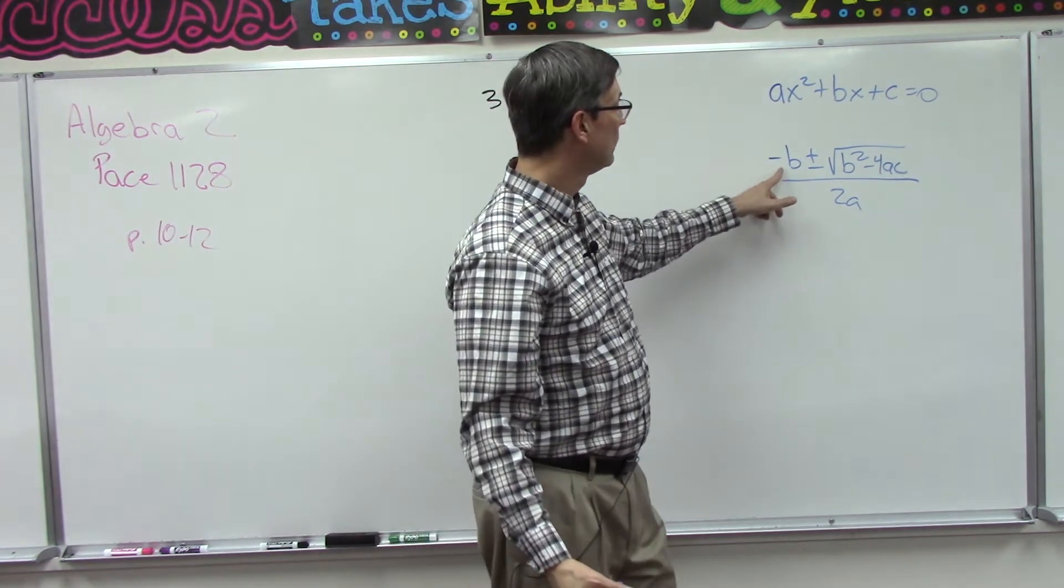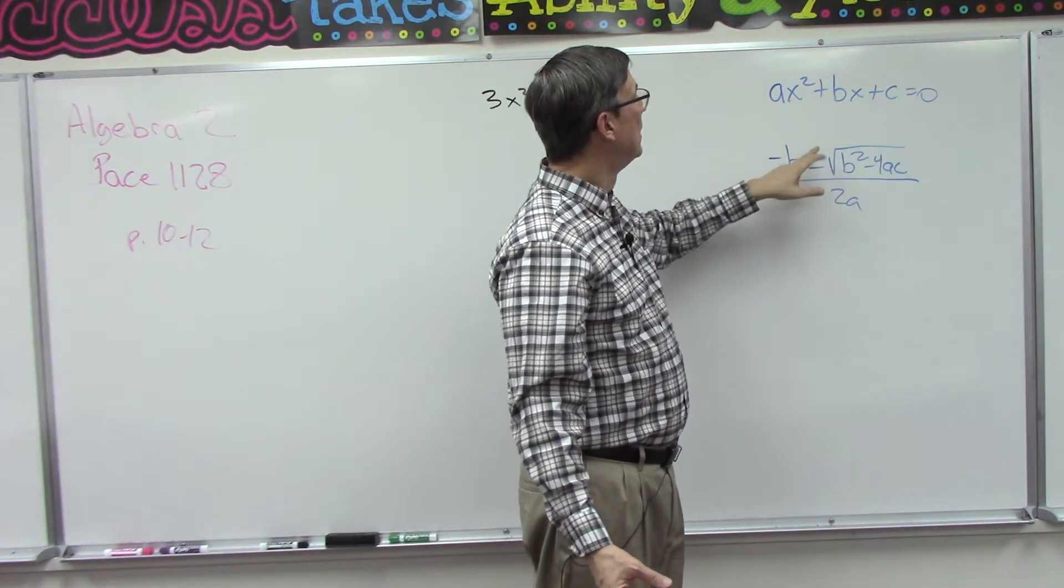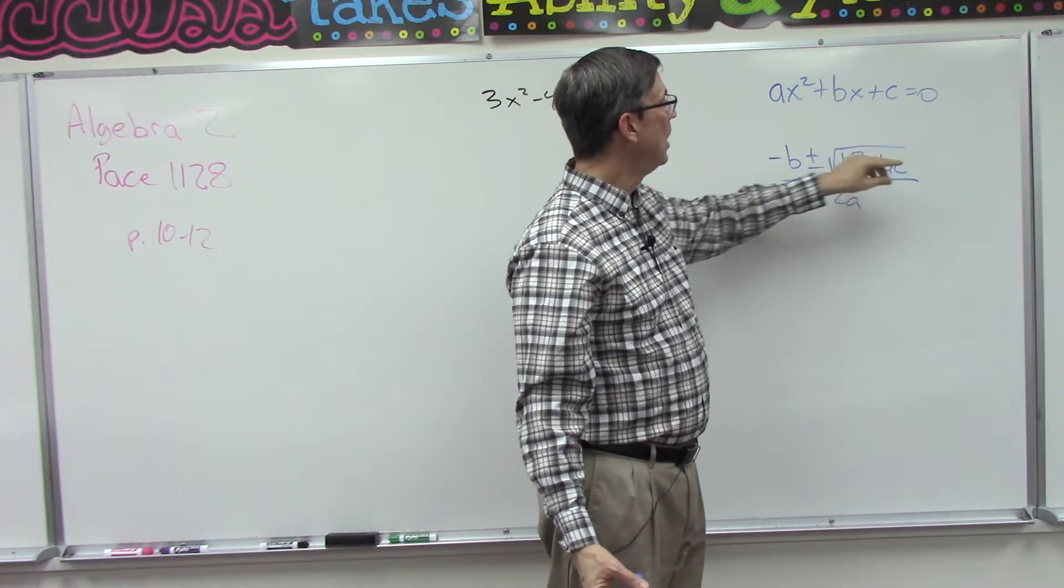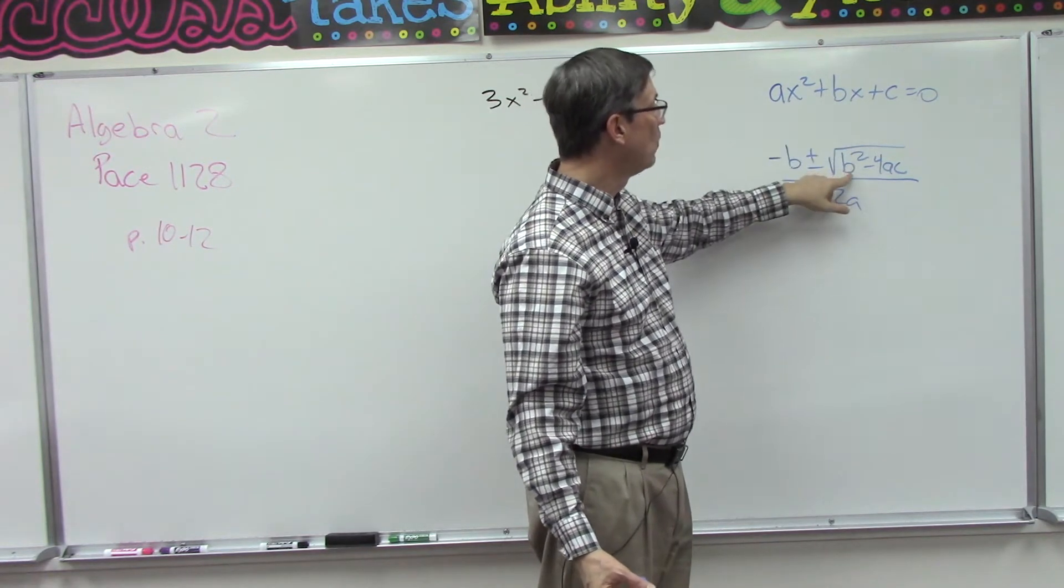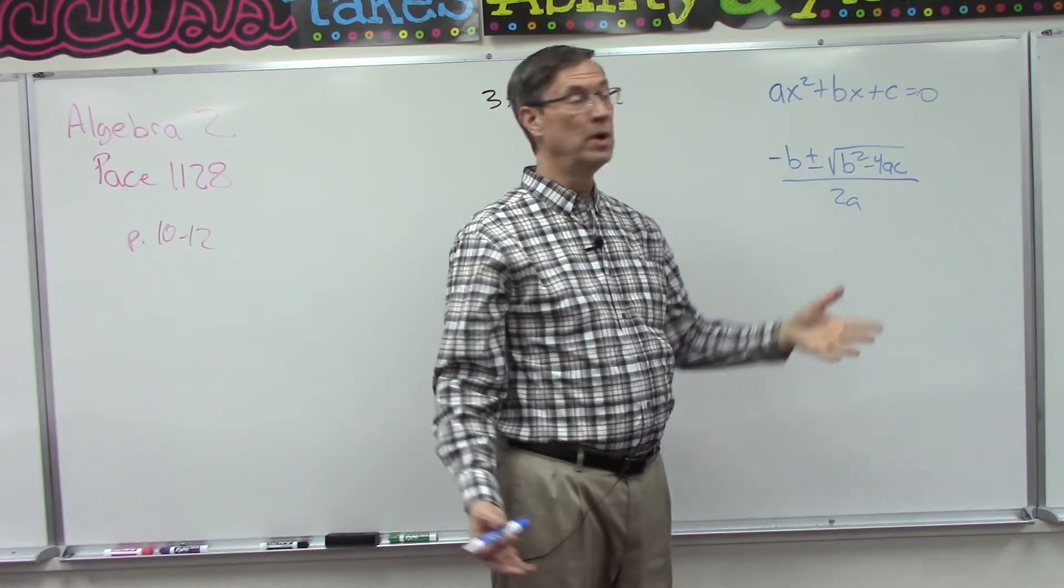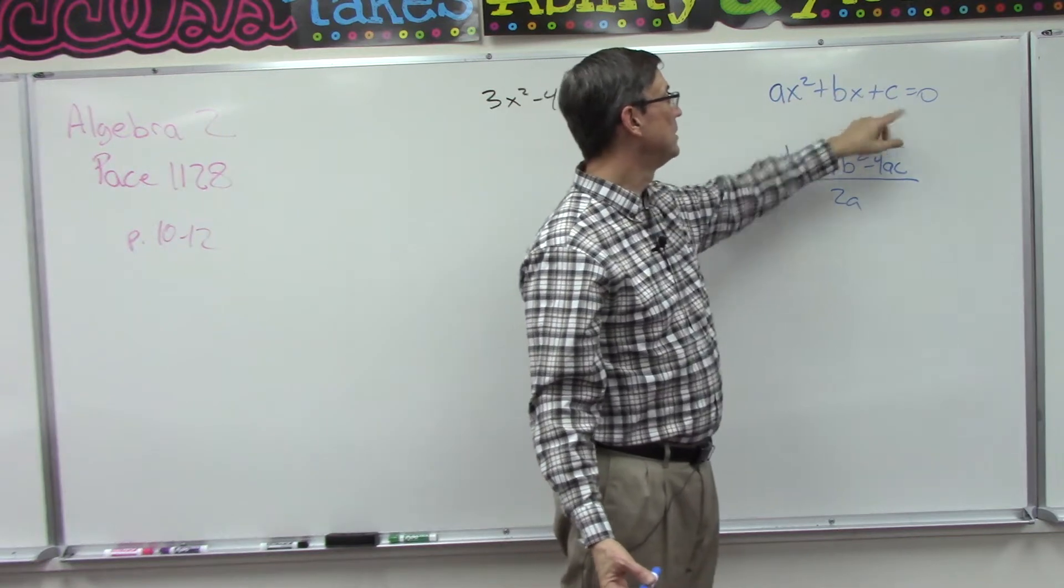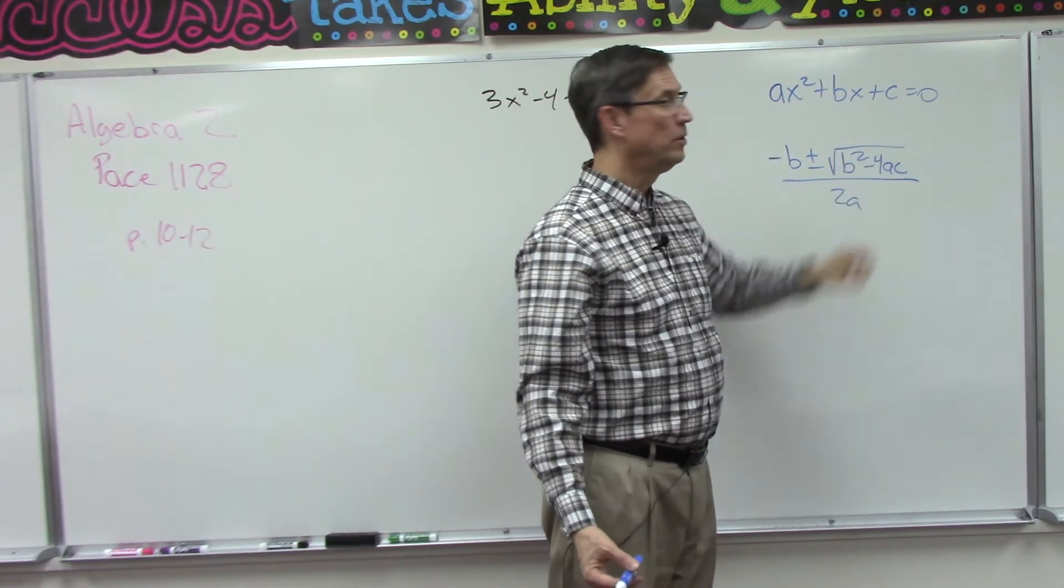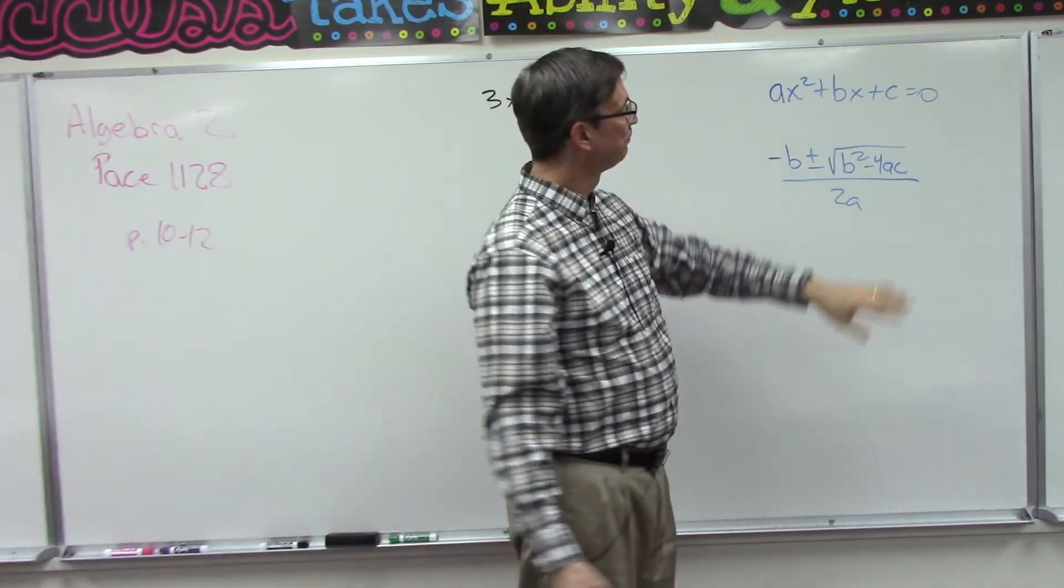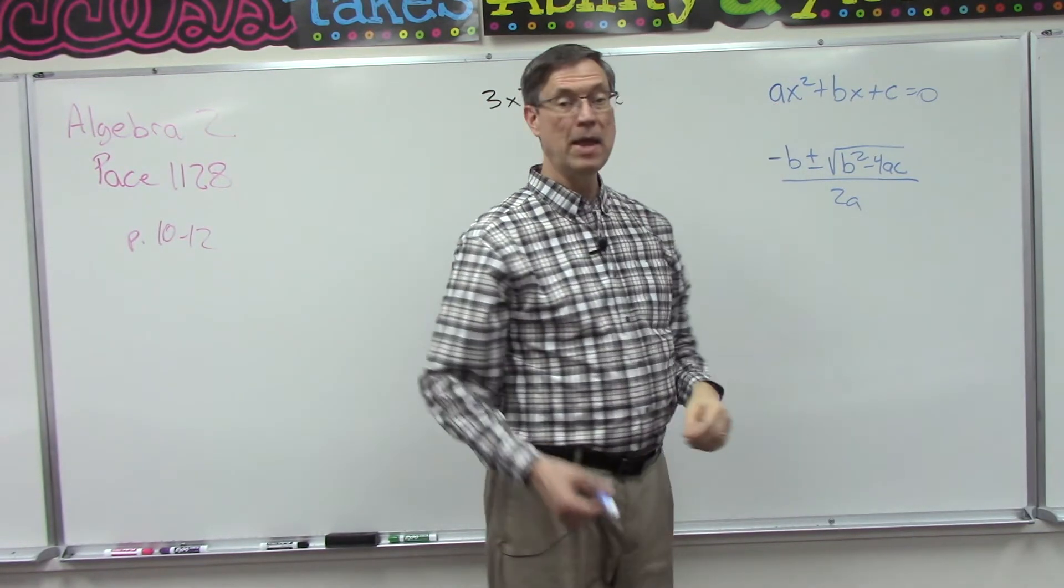Negative b, okay? And the b is whatever the value is of the x term, plus or minus the square root of the b squared minus 4, just the number 4, times the letter a, whatever the value of a is, times c. That whole thing is under the radical. So you solve that. And then all over 2 times the value of a.